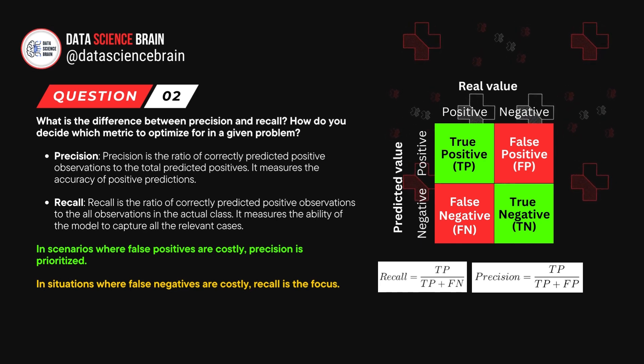So according to the situation, if the false positive is costly, then you should be using precision. In scenarios where false negatives are costly, recall is the focus. That's the example.